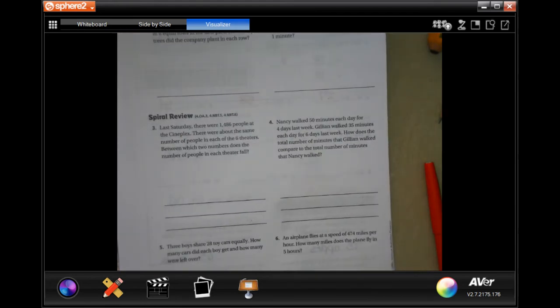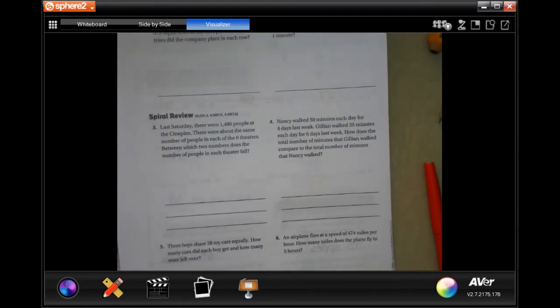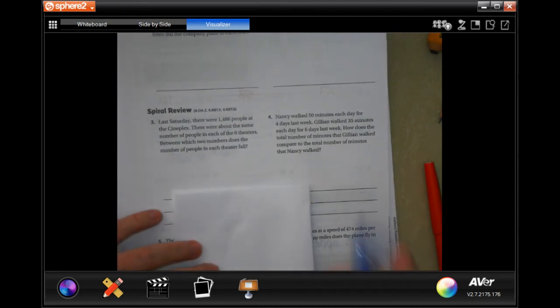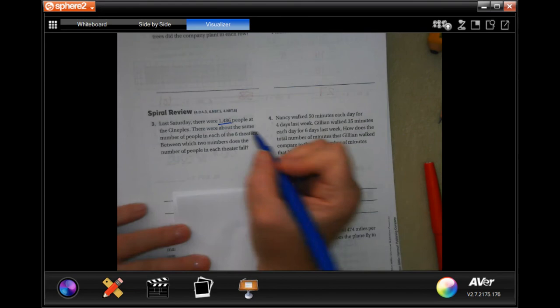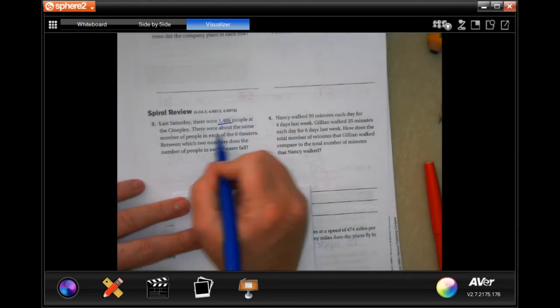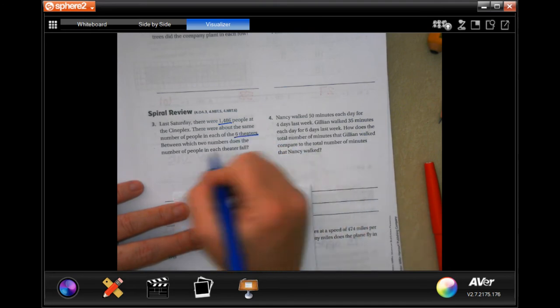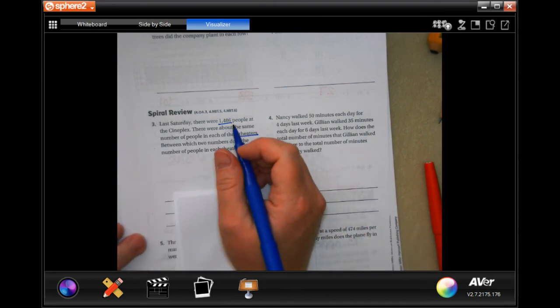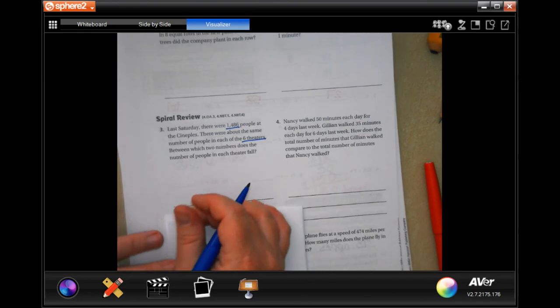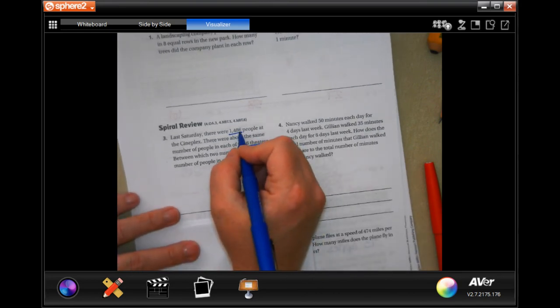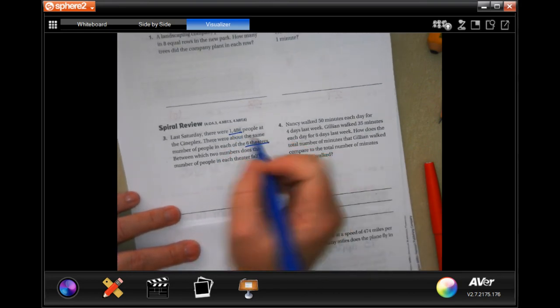So number three says, last Saturday, there were 1,486 people at the Cineplex. There were about the same number of people in each of the six theaters. Between which two numbers does the number of people in each theater fall? Well, I could round that to 1,400, or I could round it to 1,500, right?